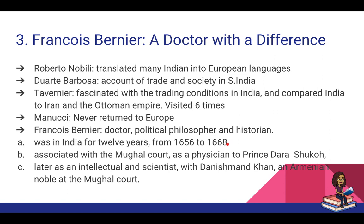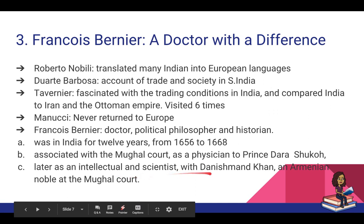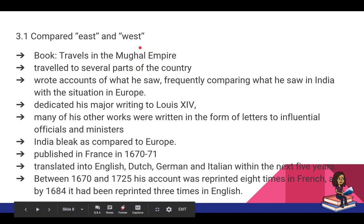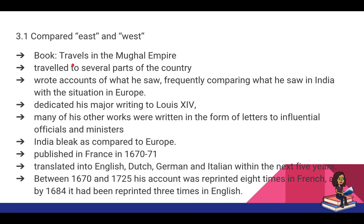Francois Bernier was a doctor, political philosopher, and historian who was in India for 12 years from 1656 to 1668. He was initially associated with the Mughal court as personal physician to Prince Dara Shikoh, and after Dara Shikoh was beheaded he joined Danishmand Khan's court as an intellectual and scientist. His book is called Travels in the Mughal Empire. He traveled to several parts of the country and frequently compared what he saw in India with the situation in Europe — usually to the detriment of India. He dedicated most of his writings to King Louis XIV.